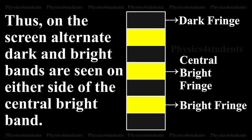Thus, on the screen, alternate dark and bright bands are seen on either side of the central band.